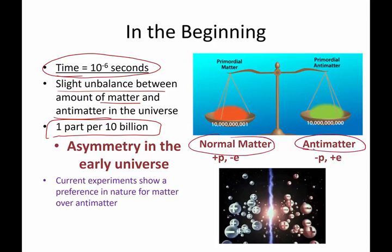So for every 10 billion protons, there were 10 billion and one positively charged protons. For every 10 billion negatively charged protons. And in the early universe, that means there was a little bit of lack of symmetry, asymmetry.